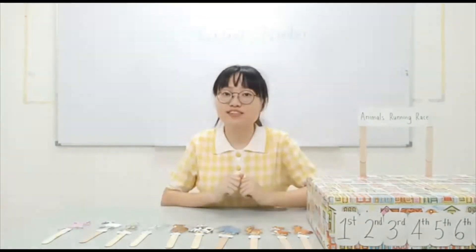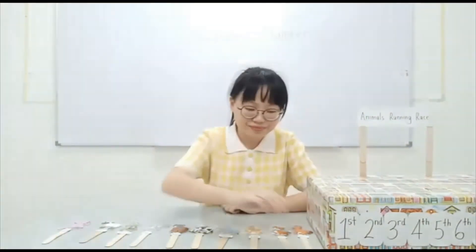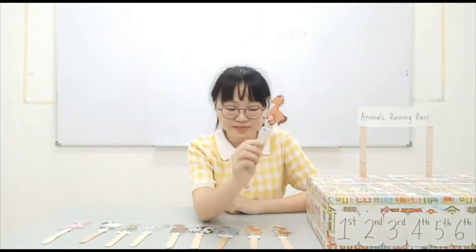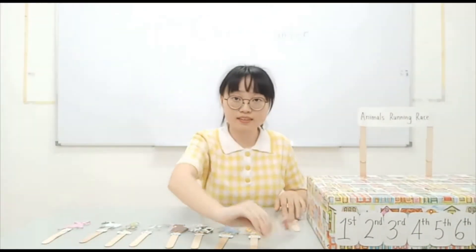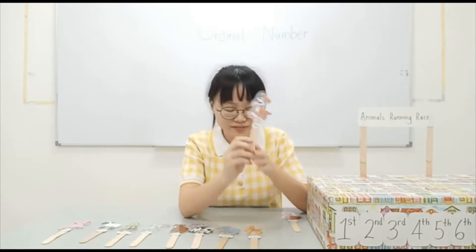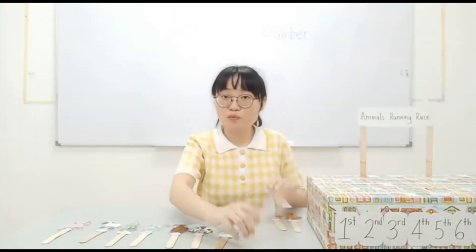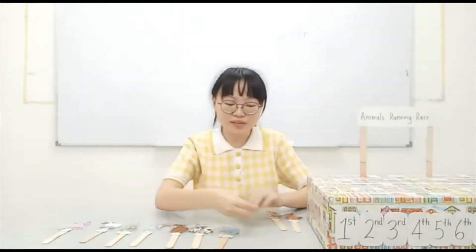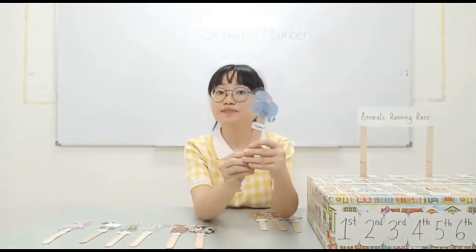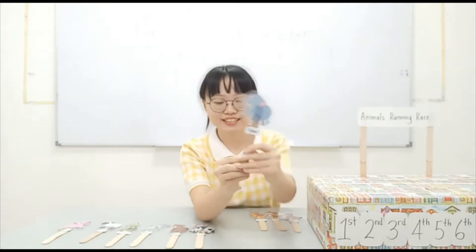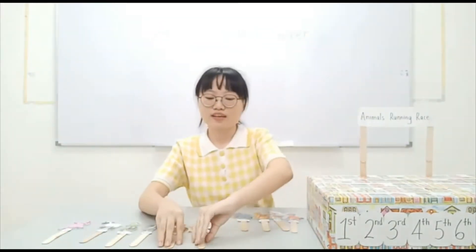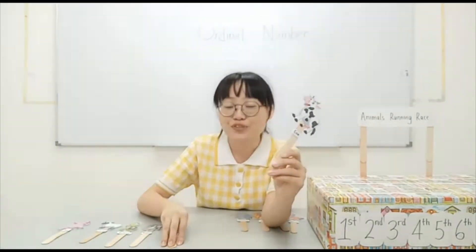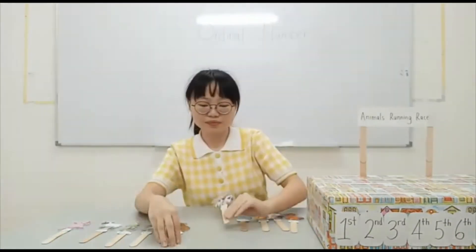The animals in the forest decided to have a race to know who ran the fastest. There were the horse, the dog — and what is this? The camel. How about this? The elephant. And this? A cow.